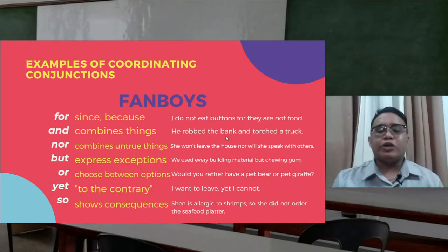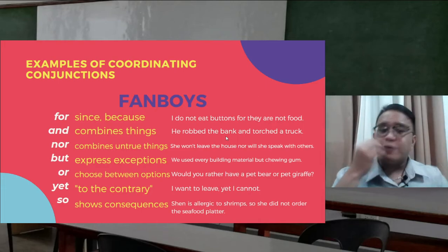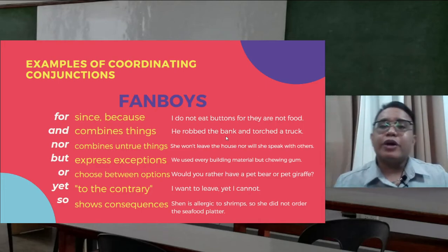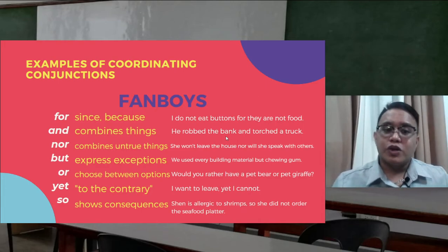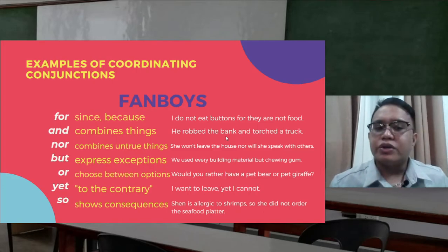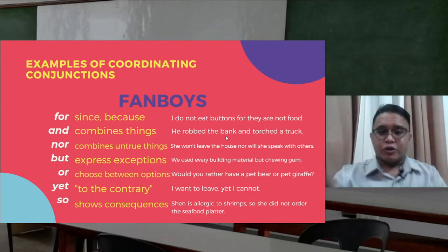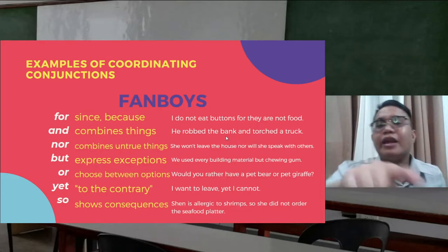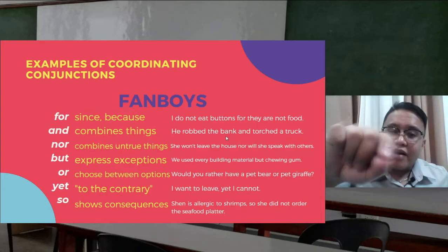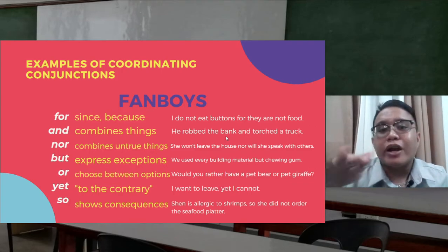Here is a more detailed description of FANBOYS. Please pause this video and take down notes. For 'for' — it can be replaced with 'since' or 'because': 'I do not eat buttons, for they are not food.' For 'and' — it combines things: 'He robbed the bank and torched a truck' — both statements have the same structure.